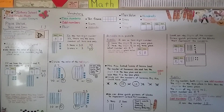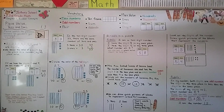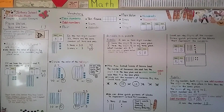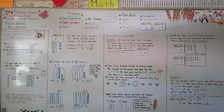If you missed lessons 1.1 and 1.2 where we learned about even and odd numbers, they're linked in the description so you can go back and watch them. Remember that we can draw a quick picture by making lines for tens and dots for ones. Our next lesson, 1.4, is about numbers in expanded form. I hope I'll see you there — have a wonderful day and hit the like button. Bye!